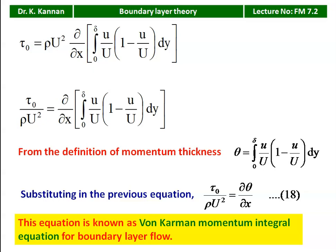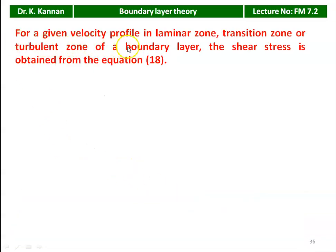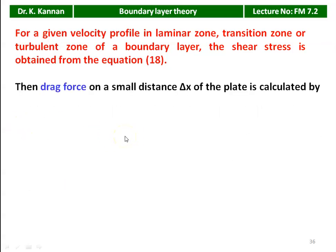What is required next? We need the velocity profile. Once we know the velocity profile u/U, we can substitute it, calculate the momentum thickness θ, then use the Von Karman equation to determine shear stress and other parameters — this is the Von Karman momentum integral approach. For any given velocity profile (laminar, transition, or turbulent zone), the shear stress τ₀ may be obtained from equation 18.